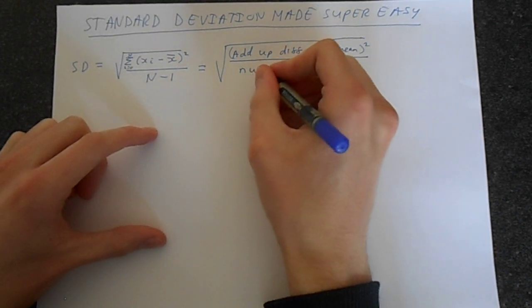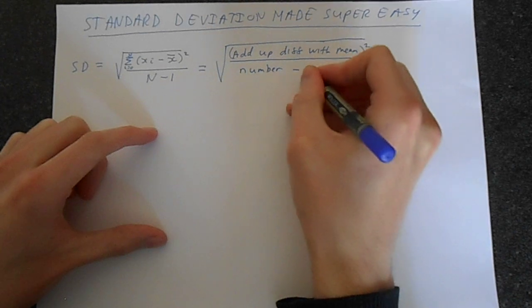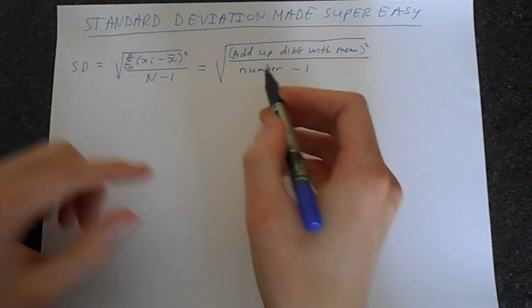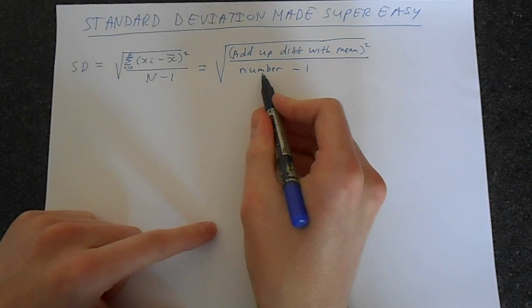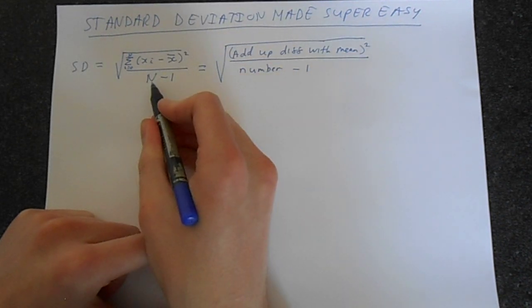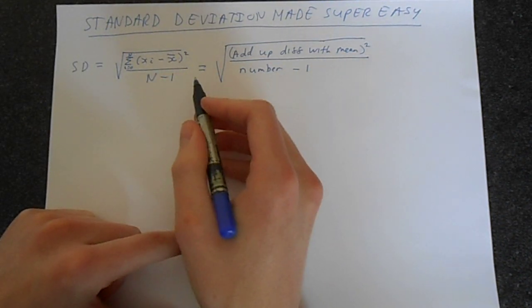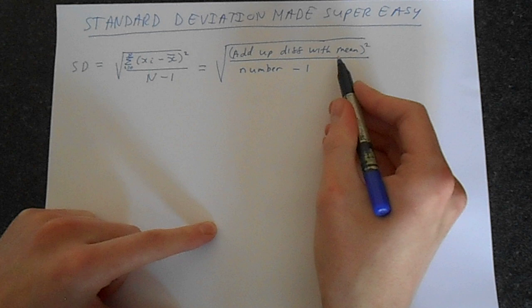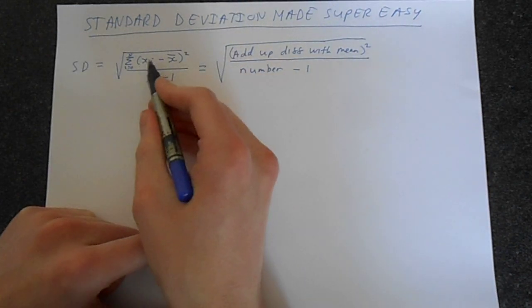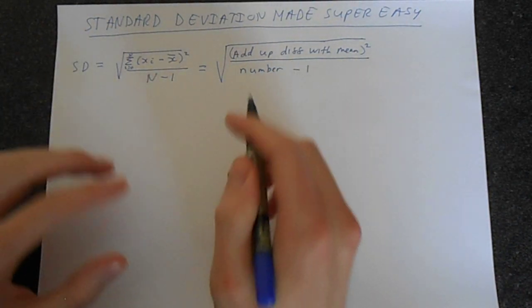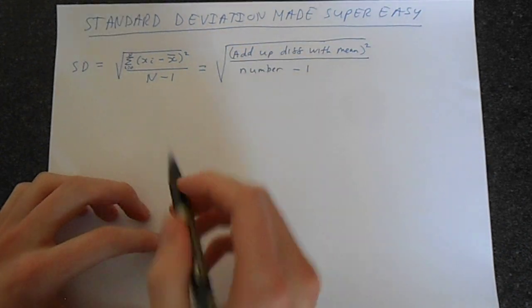And then at the bottom, we've got number minus 1. So we've got the number of the things. We subtract 1. That's the n minus 1. And this top bit is basically saying add up all of the differences with the mean and square it. That's a set of instructions in math speak. And this is, of course, the square root.